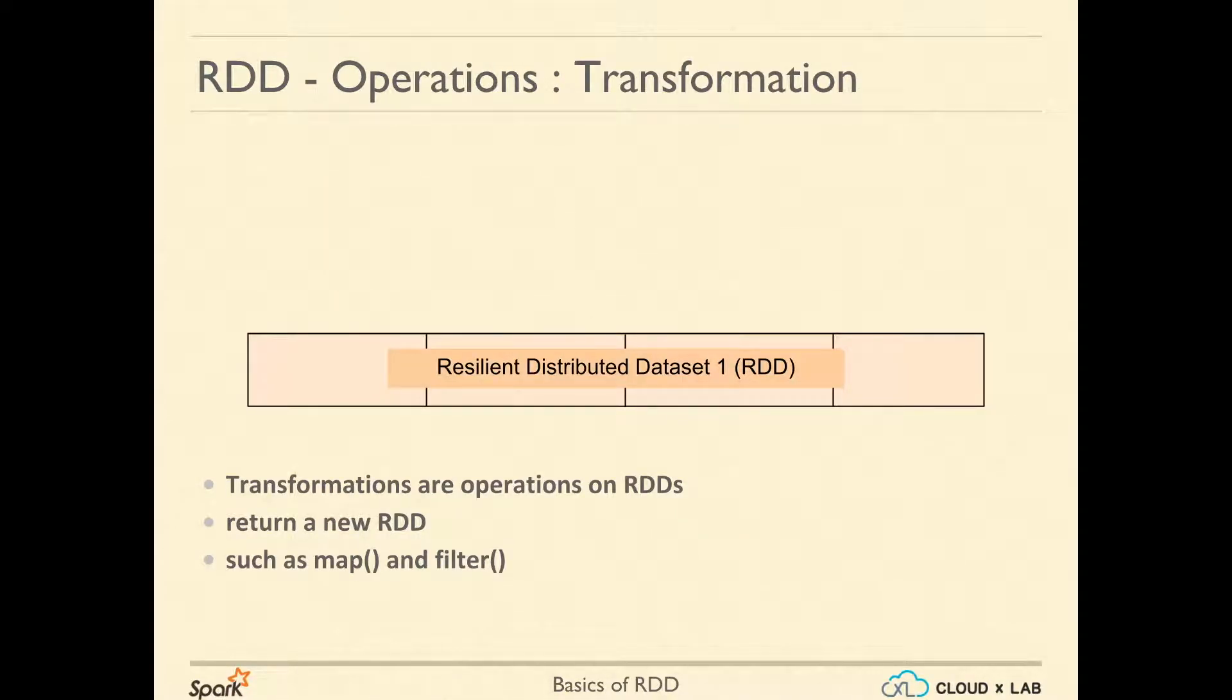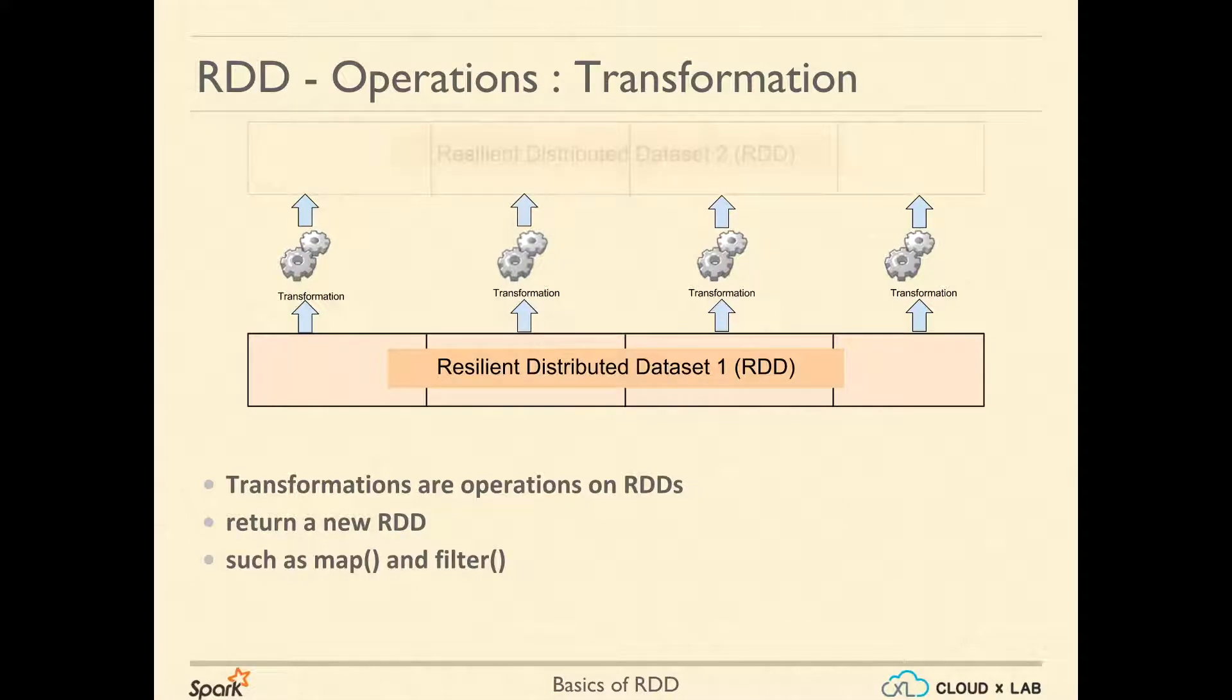A transformation translates one RDD into another RDD. A transformation results in a new RDD while the existing RDD remains unchanged. There are many transformations. Map and filter are more popular ones.